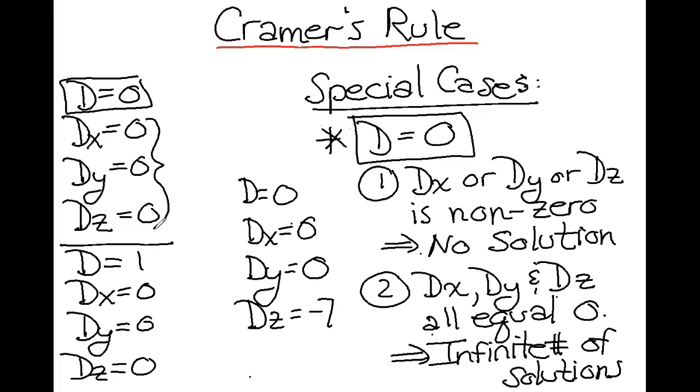In this case, dx, dy, and dz are all zero. So we can't have the no-solution case. We have an infinite number of solutions.